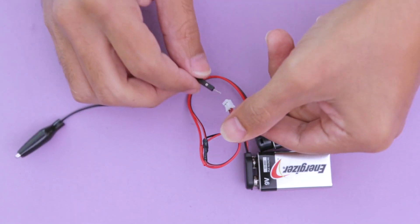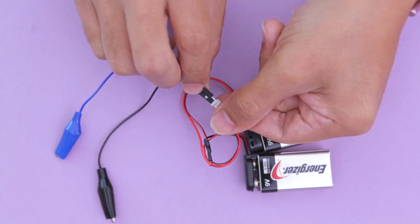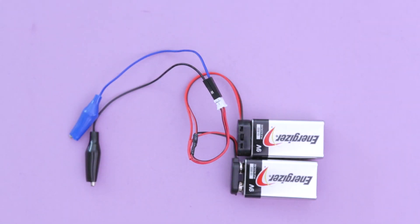These alligator clips feature male jumpers so we can simply plug them directly into the JST connector from the 9-volt battery.